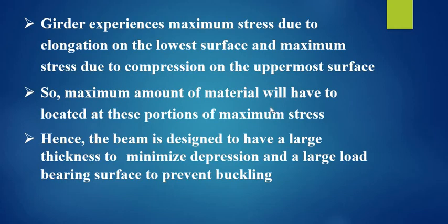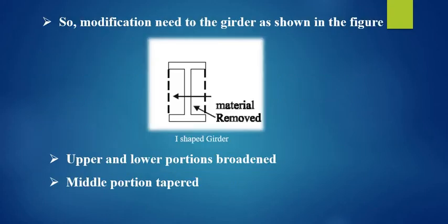Girder experiences maximum stress due to elongation on the lowest surface and maximum stress due to compression on the uppermost surface. So, the maximum amount of material will have to be located at these portions of maximum stress. Hence, the beam is designed to have a large thickness to minimize depression and a large load-bearing surface to prevent buckling.